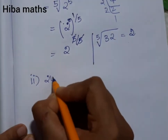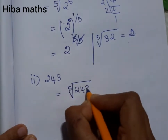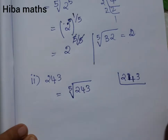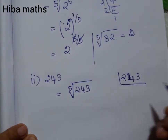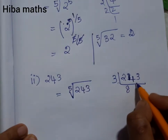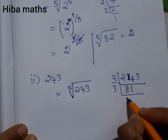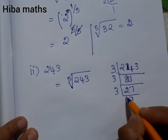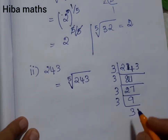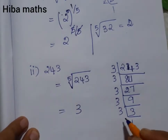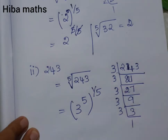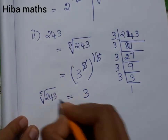Now the second question. We need to find the 5th root of 243. Using the multiplication table: 3 eights are 24, 3 ones are 3, 3 twos are 6, 3 sevens are 21, 3 nines are 27, 3 threes are 9, 3 ones are 3. Counting: 1, 2, 3, 4, 5 — so 243 equals 3 to the power 5. Therefore, the 5th root of 243 is 3.